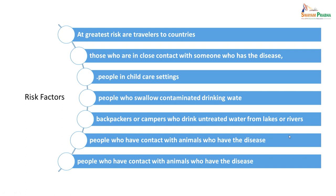The greatest risk is for travellers in endemic countries, those in close contact with someone who has the disease, people in childcare settings, those who swallow contaminated drinking water, backpackers or campers who drink untreated water from lakes or rivers, and people who have contact with infected animals.